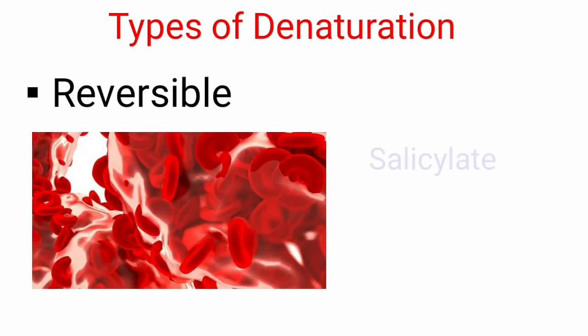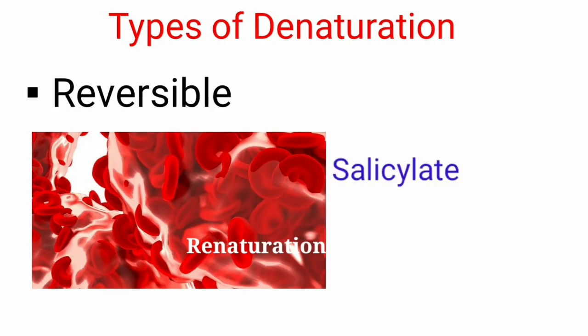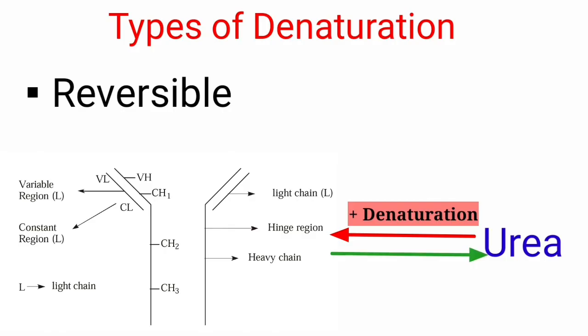Coming to the second type — reversible denaturation — sometimes denaturation is reversible when a denaturing agent is removed. For example, hemoglobin undergoes denaturation in the presence of salicylate, and when salicylate is removed, hemoglobin is re-natured. Immunoglobulin chains are dissociated when treated with urea, and when urea is removed by dialysis, the subunits are re-associated and the biological activity of immunoglobulin is regained.